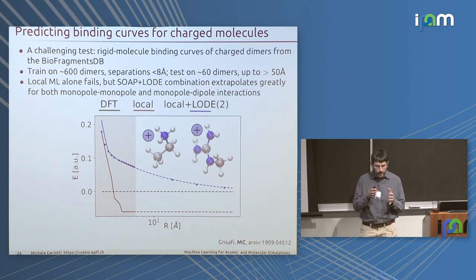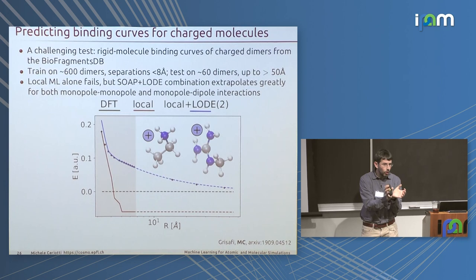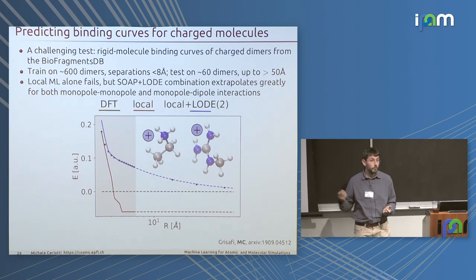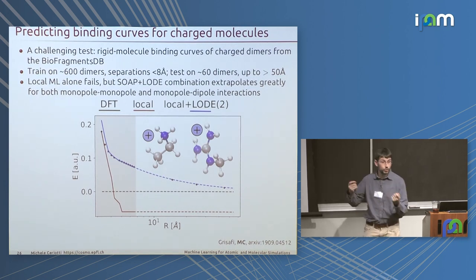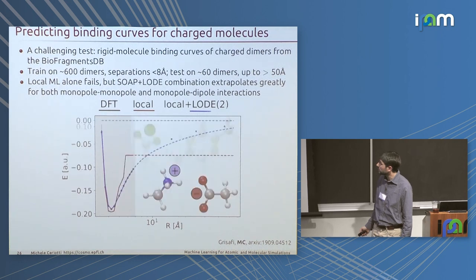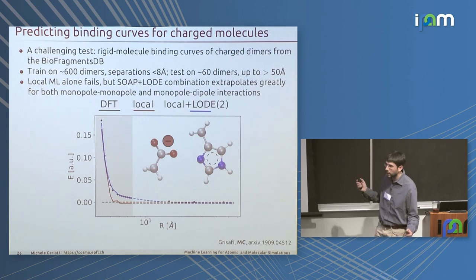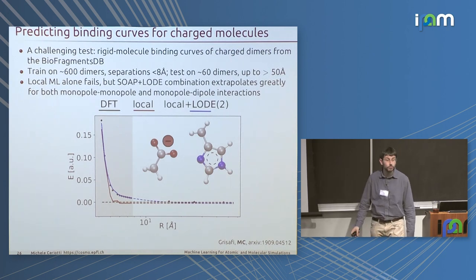I am learning a model based on a representation of a local object, but this local object is computed globally by solving the Poisson equation for the entire system. This works for everything, including charged dipoles.